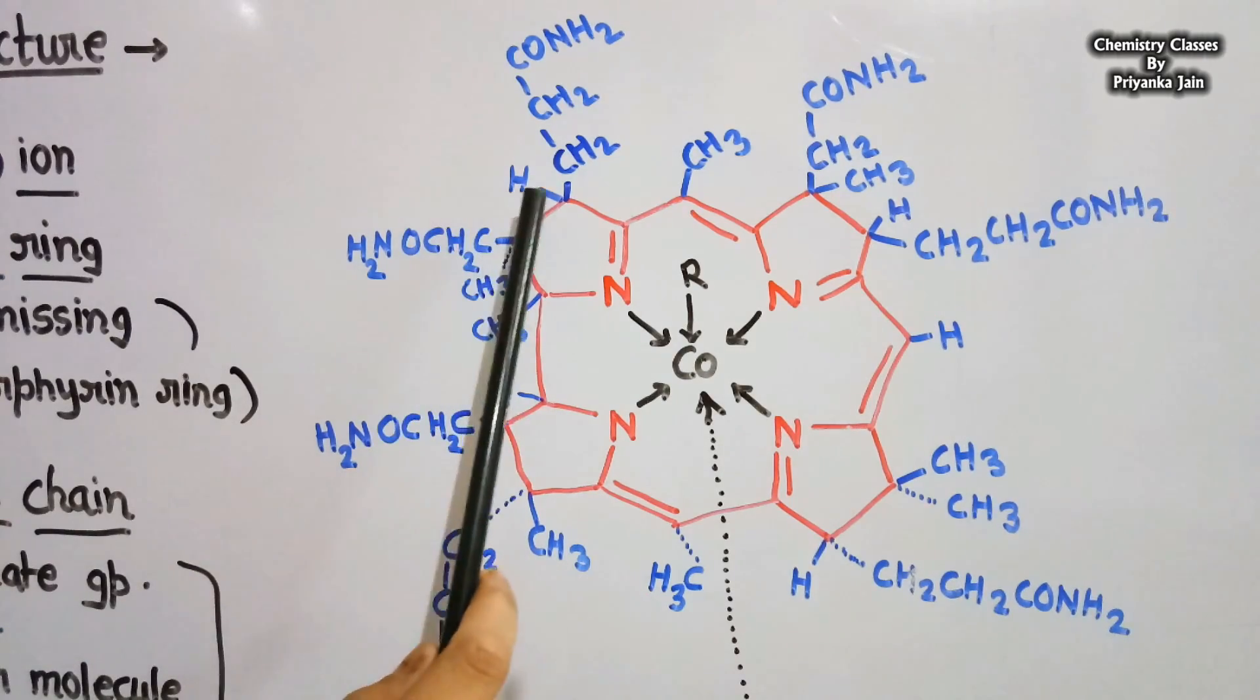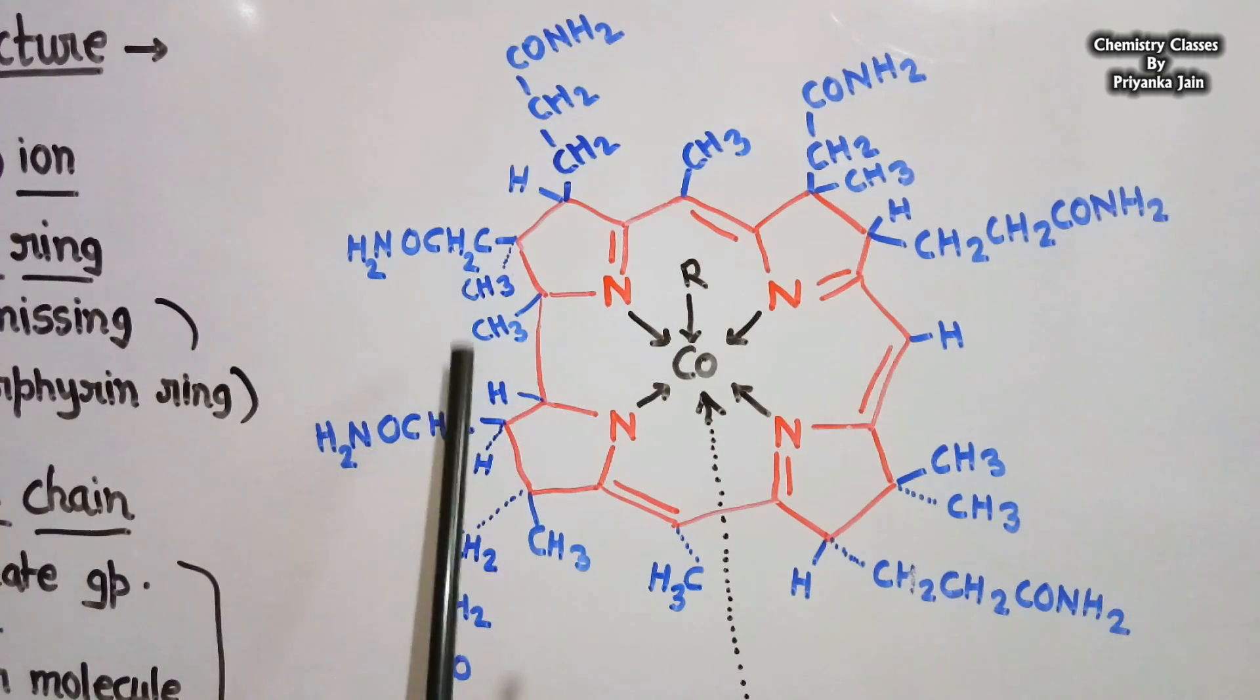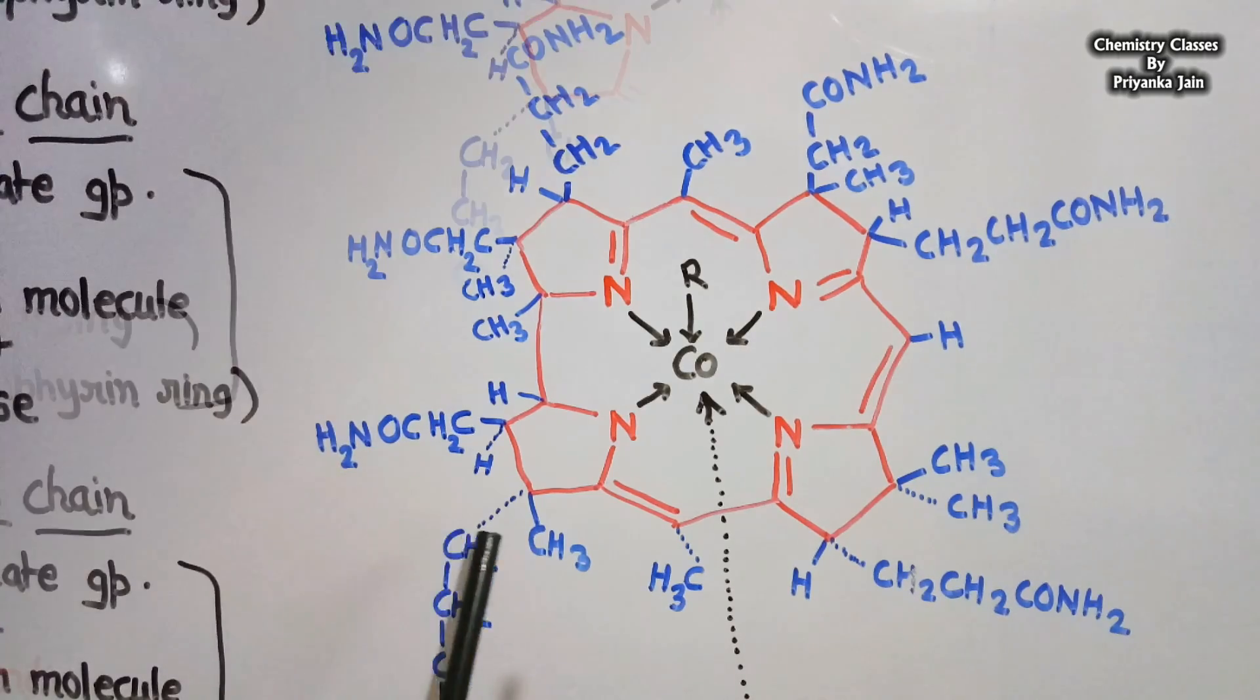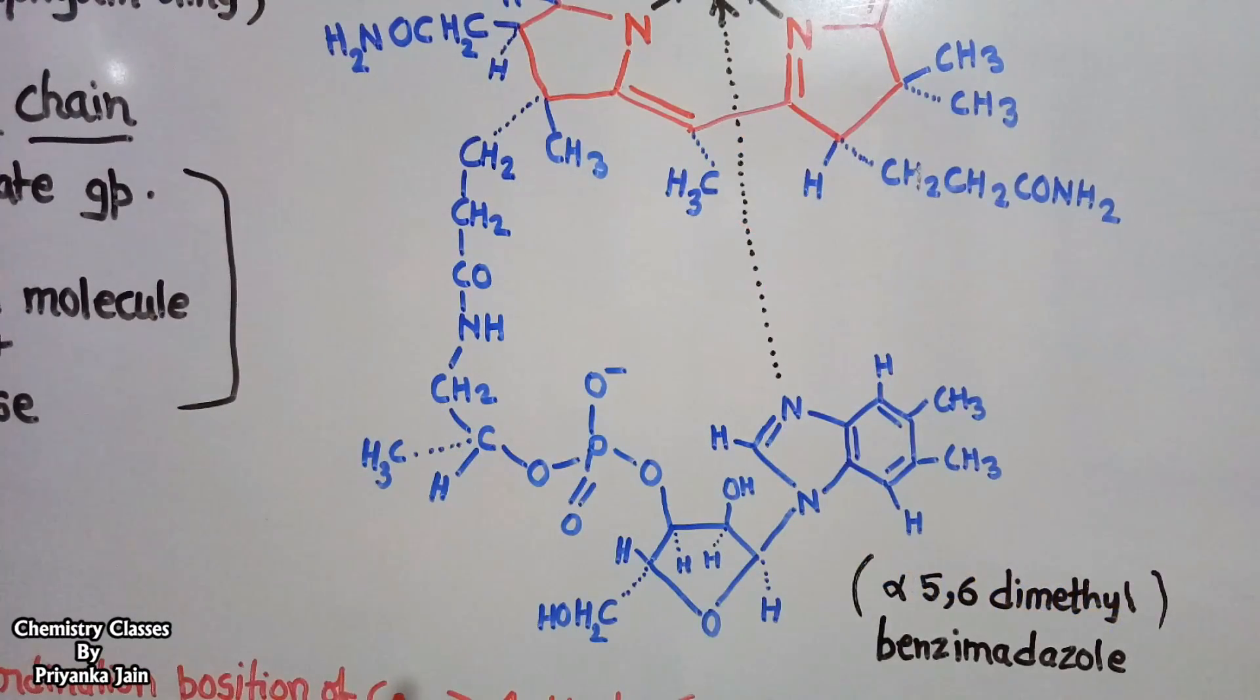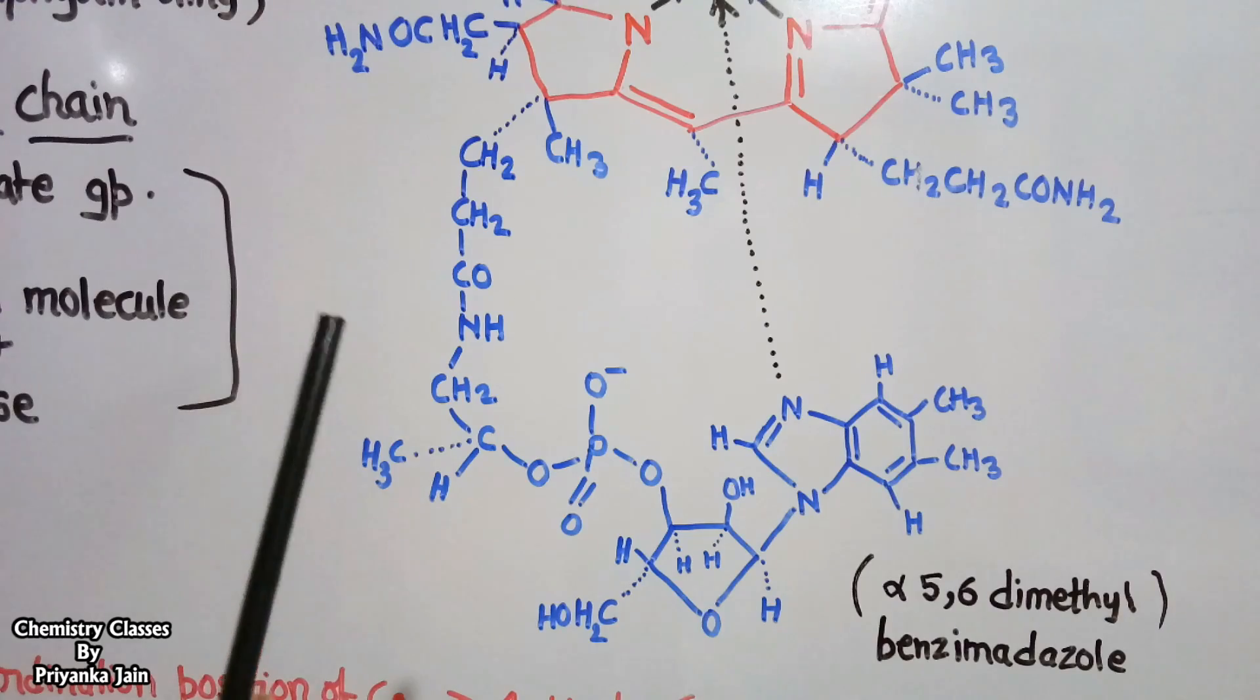There are several substituents present at the periphery of this corin ring. These are the substituents present at the periphery. And at one periphery, there is a complex chain. This is the complex chain, which consists of three parts.